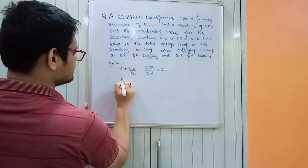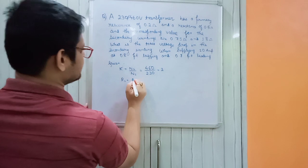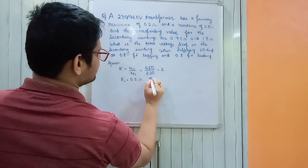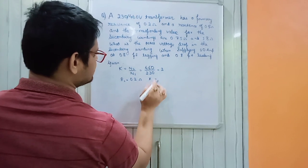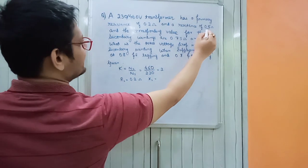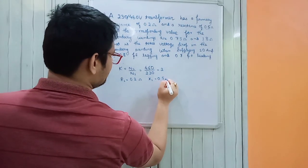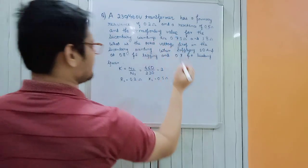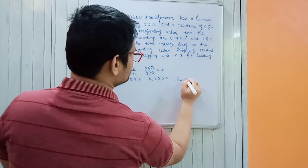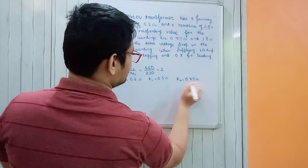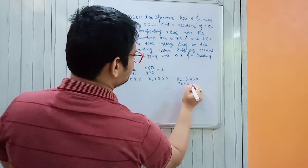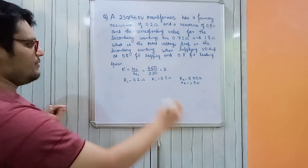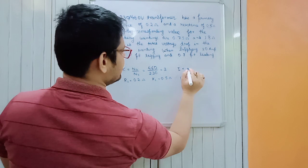The primary resistance R1 = 0.2 ohm and primary reactance X1 = 0.5 ohm. The secondary resistance R2 = 0.75 ohm and secondary reactance X2 = 1.8 ohm. The current I2 is given as 10 ampere.